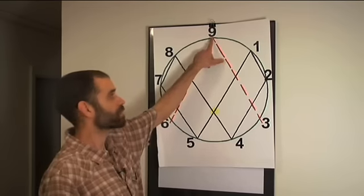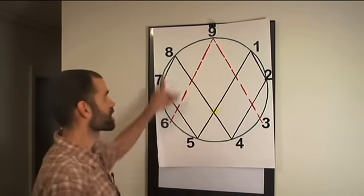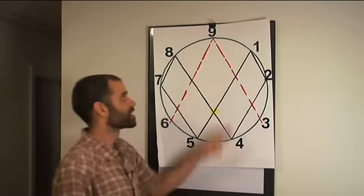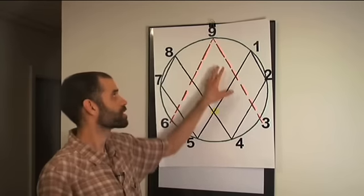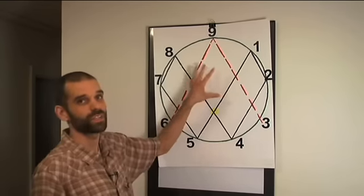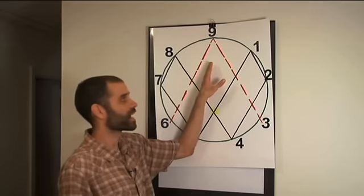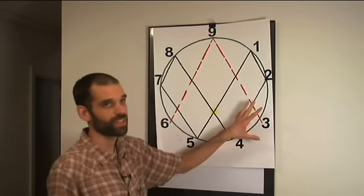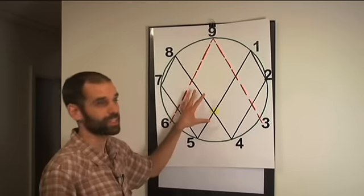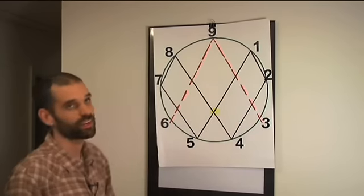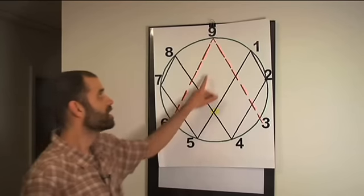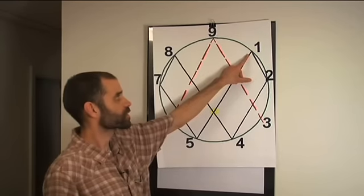So we start with nine at the top. We have a circle. One, two, three, four, five, six, seven, eight, nine. The nine, of course, never changes. No matter what you multiply nine by, it always reduces back to equal the number nine. All numbers, as we do functions on this, are going to reduce back to single digits. Why? Because we're looking at the underlying pattern.